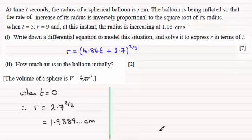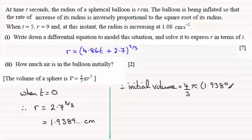Now we turn to the volume of a sphere which is given by 4 thirds pi r cubed. So therefore the initial volume, the initial volume must be equal to 4 thirds times pi times the radius which was 1.9389 and so on, and that's cubed.